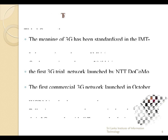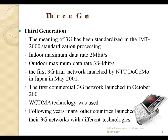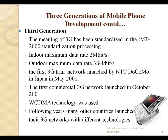In this slide, we are going to talk about the third generation of mobile phones. The meaning of 3G has been standardized in the IMT-2000 standardization process. There are two data rates — Indoor and Outdoor. Indoor maximum data rate is 2 Mbps and Outdoor maximum data rate is 384 kbps. The commercial 3G network launched in October 2001. The technology used in third generation was WCDMA. There are many other technologies embedded in new mobile phones to satisfy users.